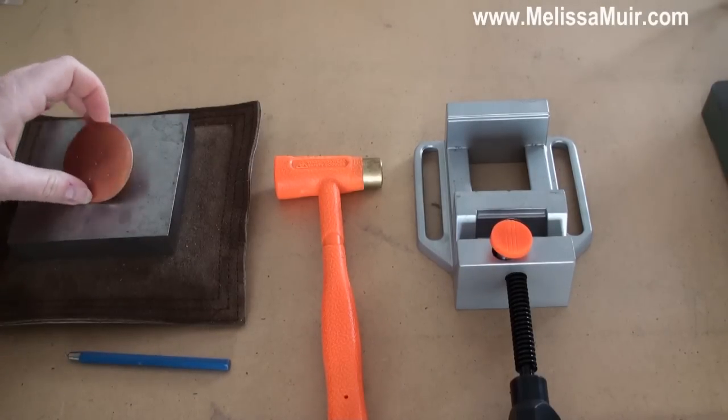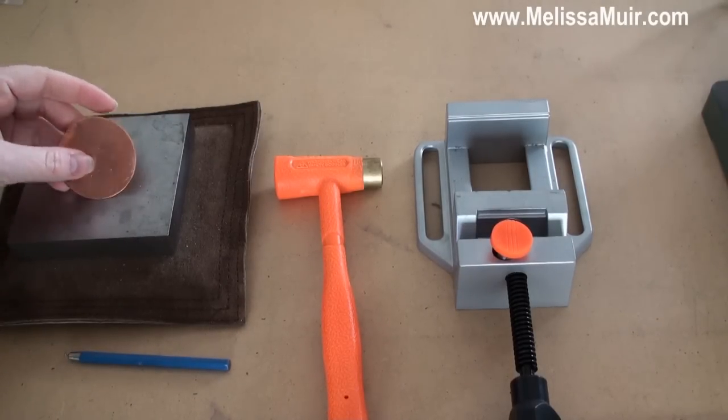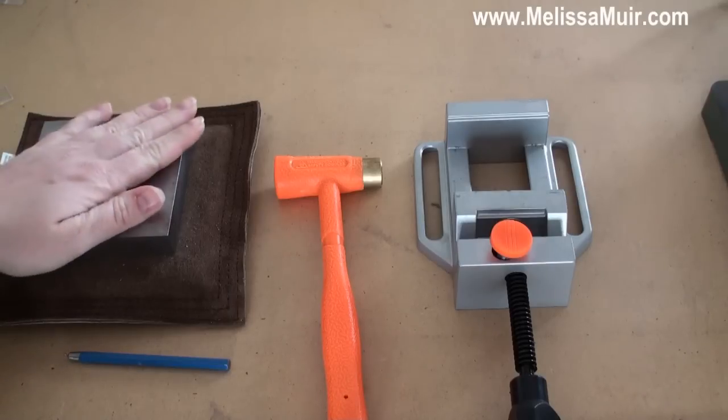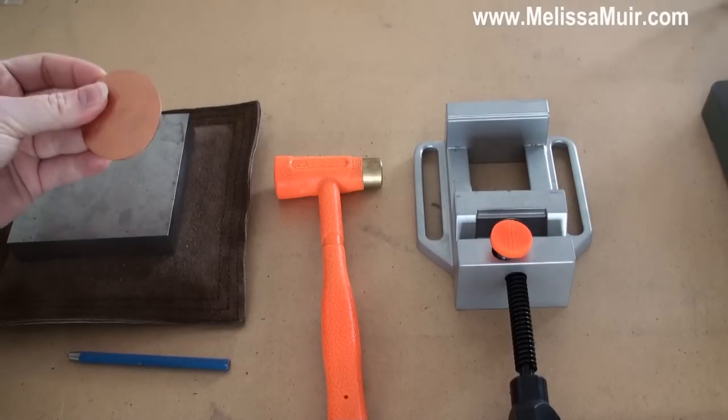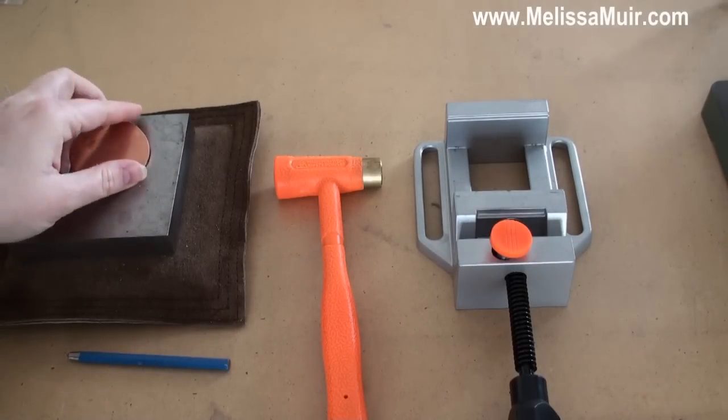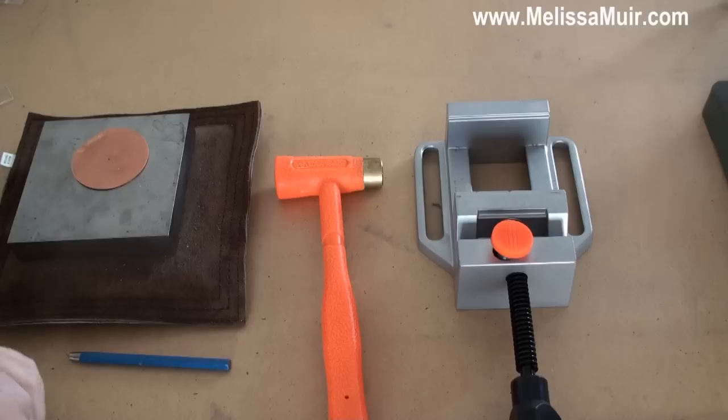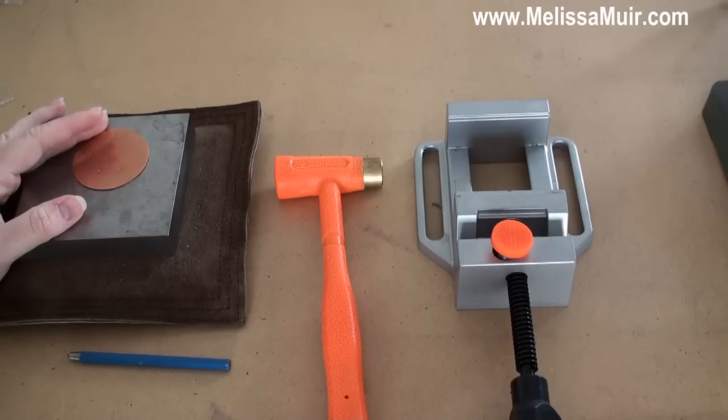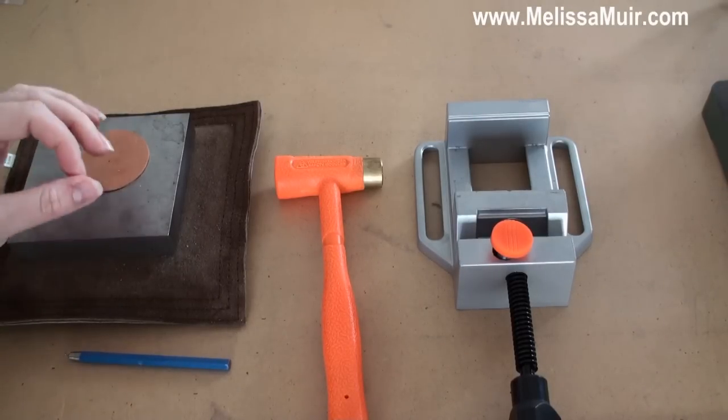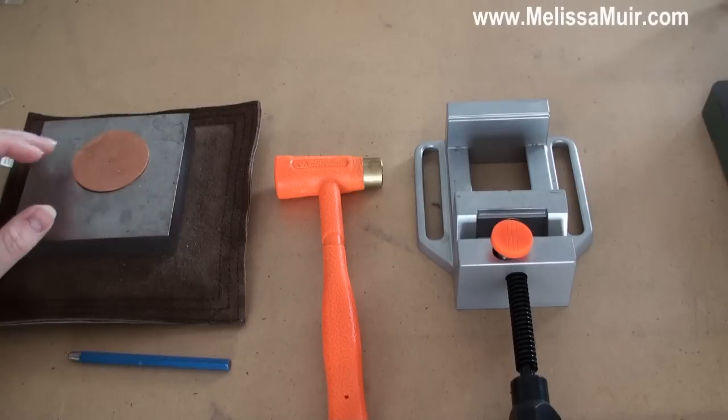Another thing that I keep in mind is that you don't always have a flat surface and you don't always have a flat piece that you're going to be working with. If I'm working with some of my domed pieces, like the pieces that I do with my hydraulic press, I will put them onto a dap and then I will knock my divot into them that way.